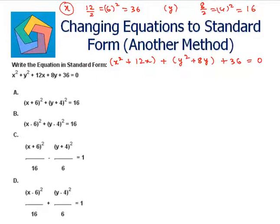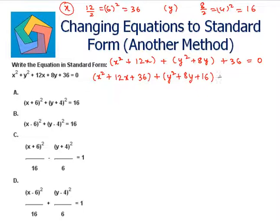So we can say x squared plus 12x plus 36, plus y squared plus 8y plus 16. In order to balance this equation, we subtract minus 36 minus 16.